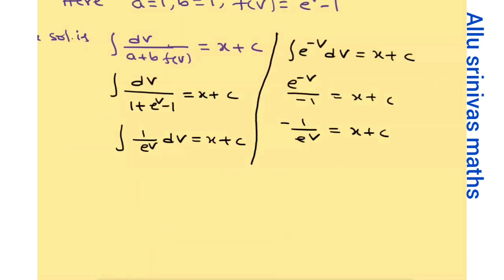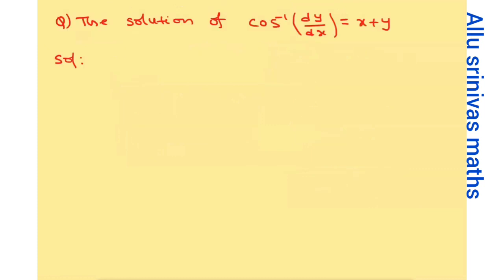The final answer for the given problem is: minus 1 over e to the power (x plus y) equals x plus c. Next, we take another problem using the same concept and the same process.